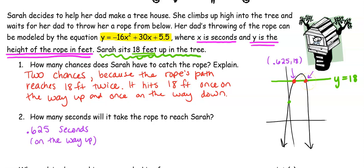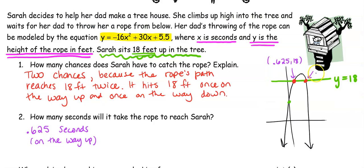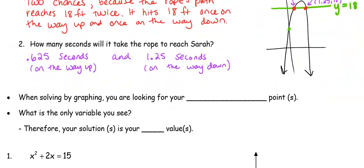And then it's going to come back down. So we're going to do that same calculation again. Second trace number five. Enter, enter. But this time I need to scroll over so it doesn't give me that same intersection point. And there's my second chance. That second intersection point is at 1.25, 18. So the second chance is at 1.25 seconds. And this is on the way down.